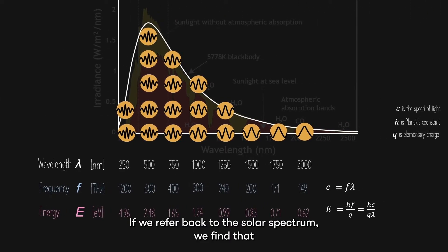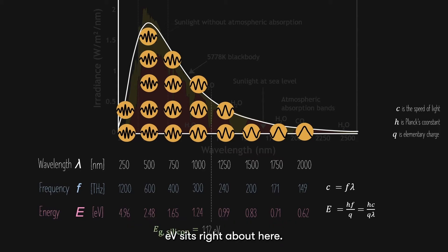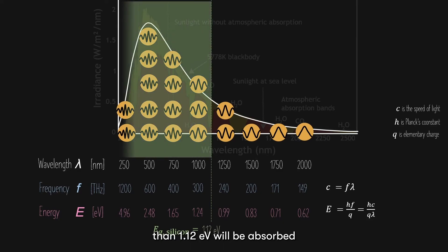If we refer back to the solar spectrum, we find that the energy band gap of silicon, which is 1.12 electron volts, sits right about here. So, any photon which has a higher energy than 1.12 electron volts will be absorbed by the solar cell and excite an electron.